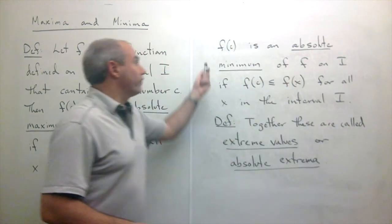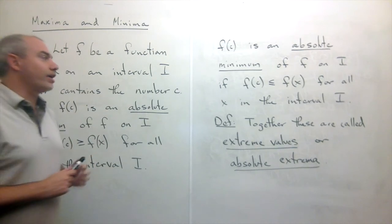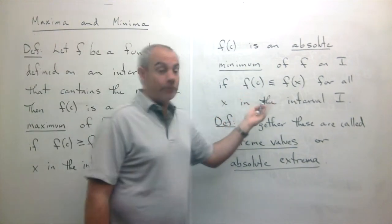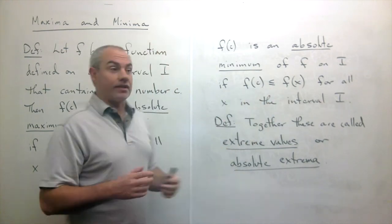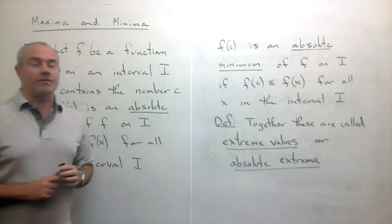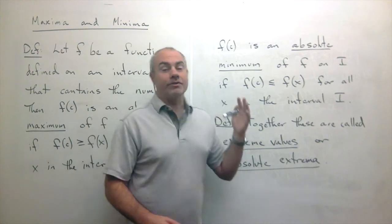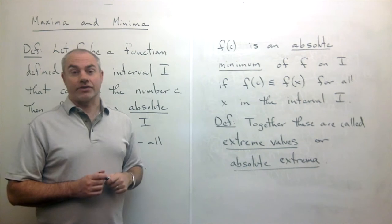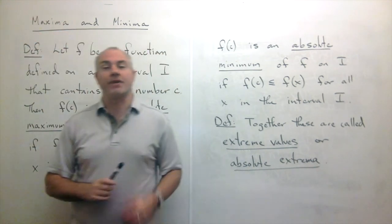We say that f(c) is an absolute minimum of f on I if f(c) is smaller than or equal to everybody else in the interval I. Together, the absolute maximum and absolute minimum are called the extreme values of the function — the very biggest it could ever be or the very smallest it can ever be.